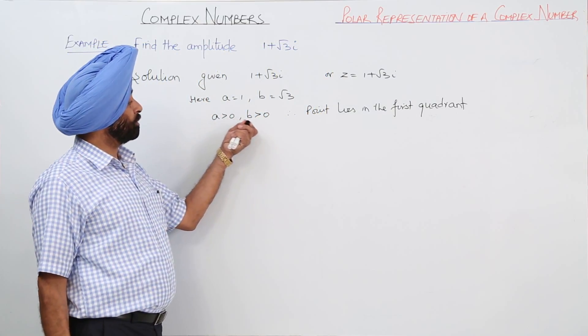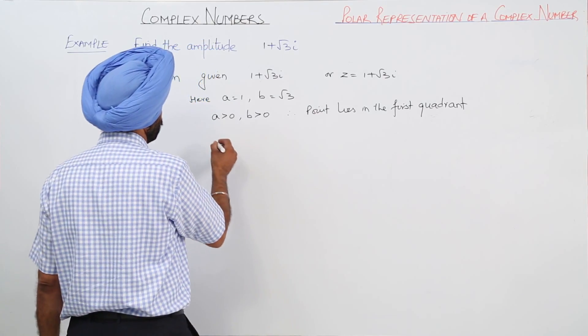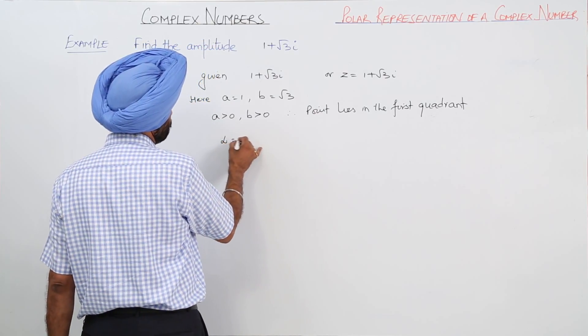So A is greater than 0, B is greater than 0, naturally it is in the first quadrant. Now what is alpha? Alpha is the amplitude.